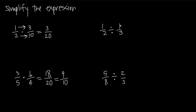When we have one fraction divided by another — in this example, we have 1/2 divided by 1/3 — all we're going to do is take the fraction that's being divided, the second fraction, and find its reciprocal, meaning we're going to flip it upside down. So we're going to change the places of the numerator and denominator.